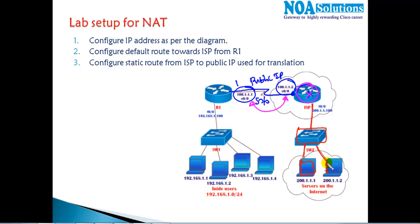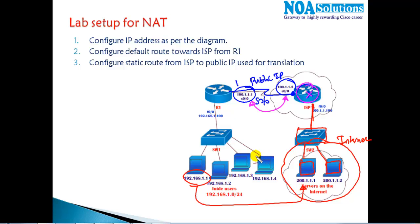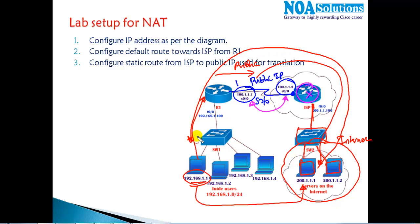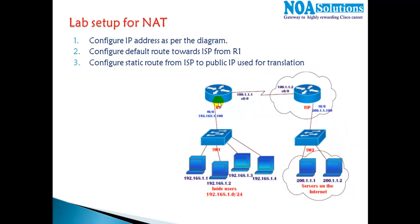Some server computers are connected with IP addresses in the 200.1.1.0 network, behaving as real internet servers. The goal is that when a LAN host at 192.168.1.1 tries to access 200.1.1.1, the private IP gets translated to a public IP at Router 1, the request reaches the server, and the server replies back with the web page. Router 1 is the one performing NAT.